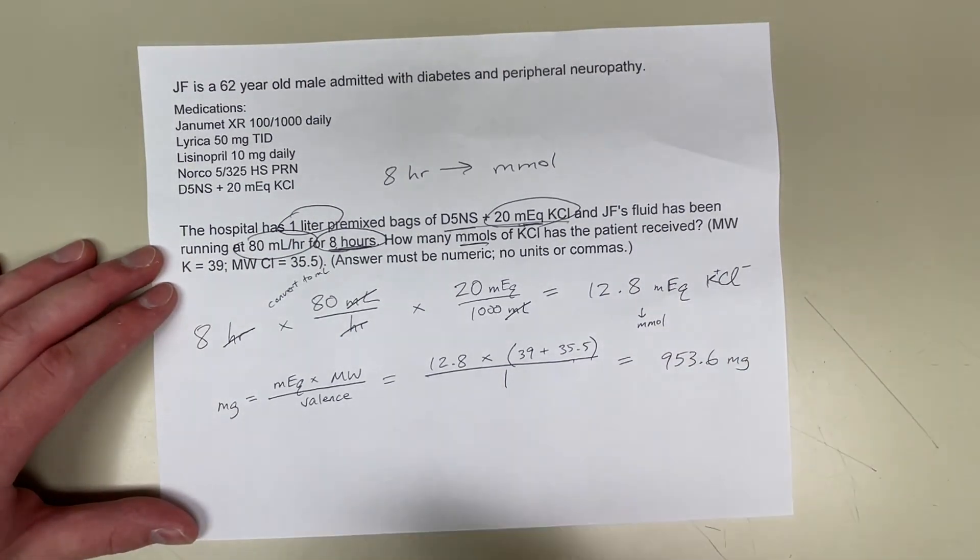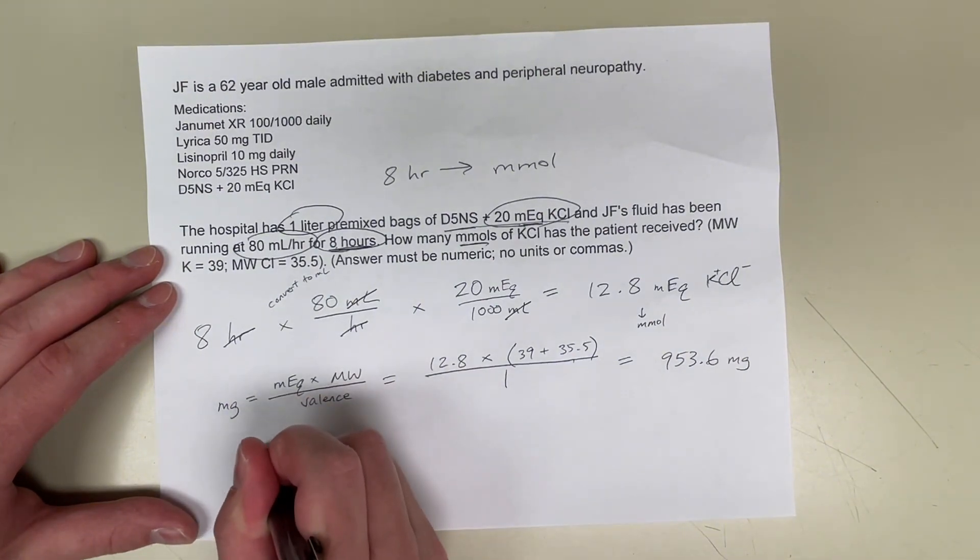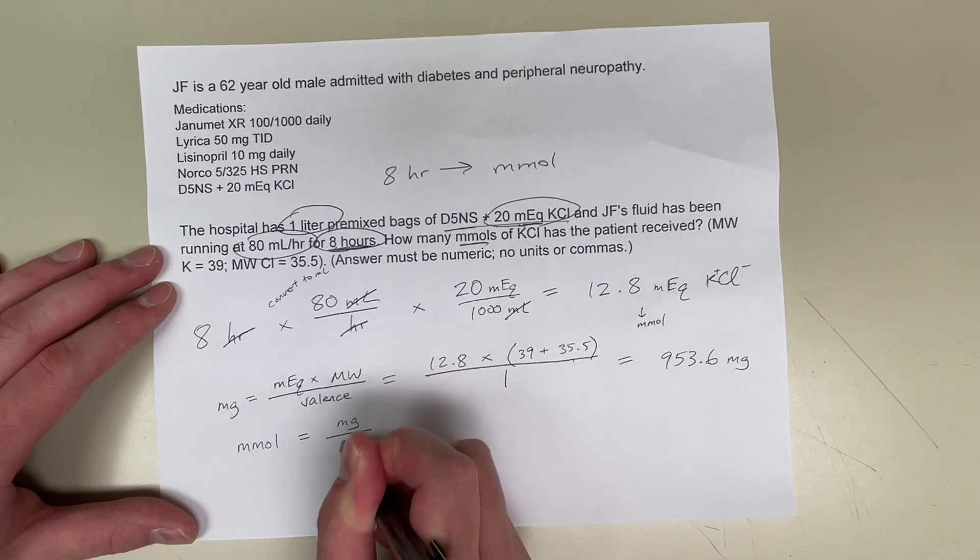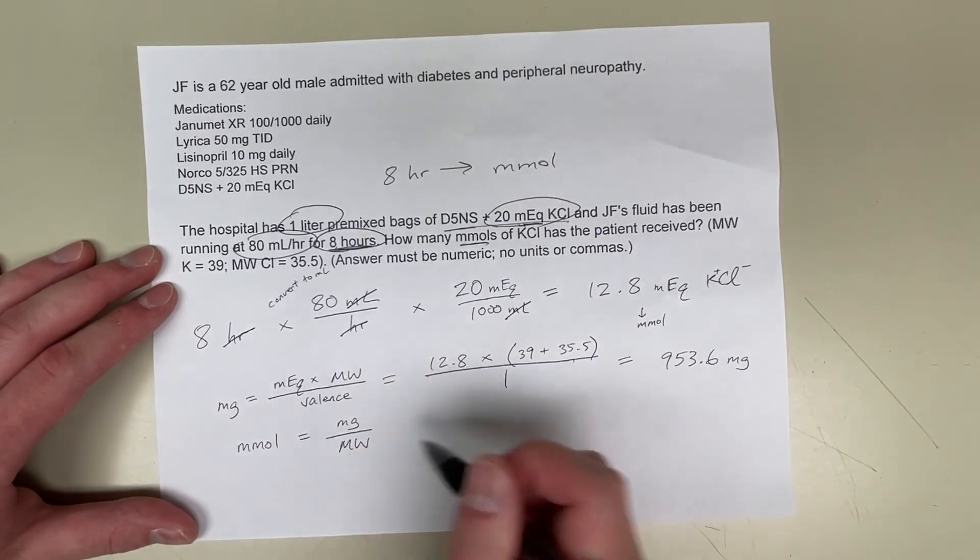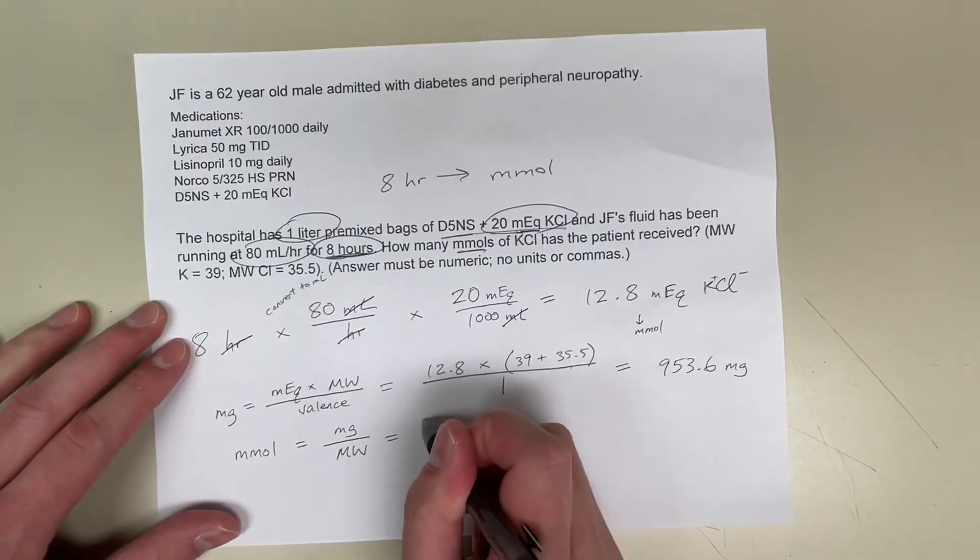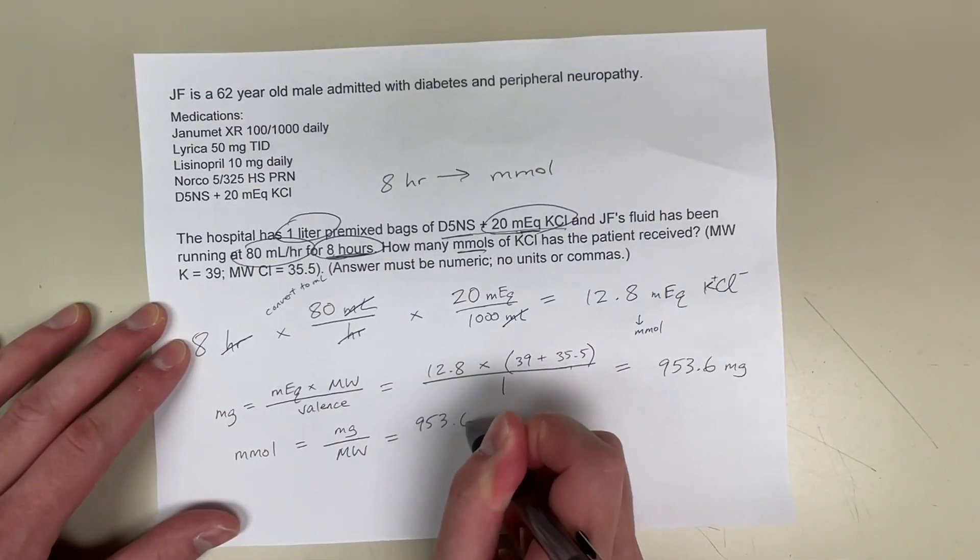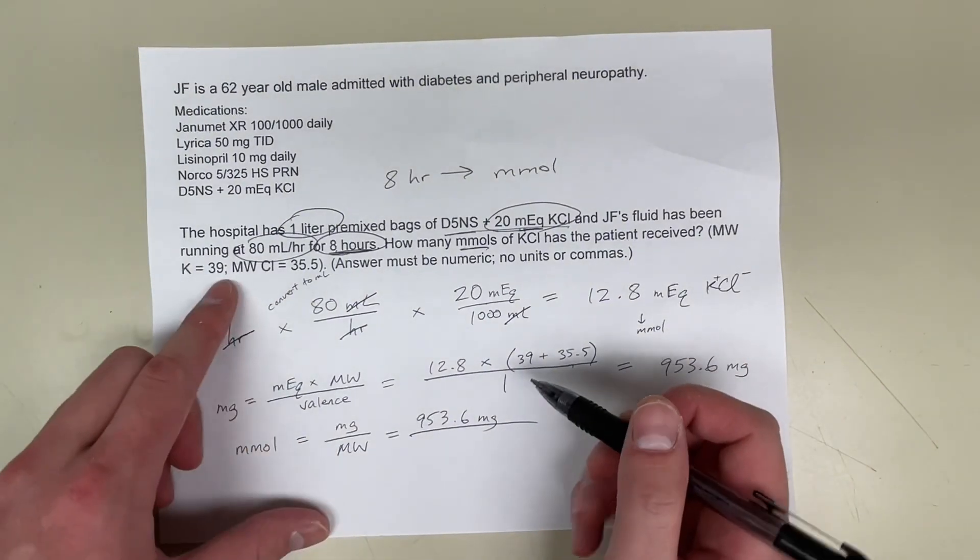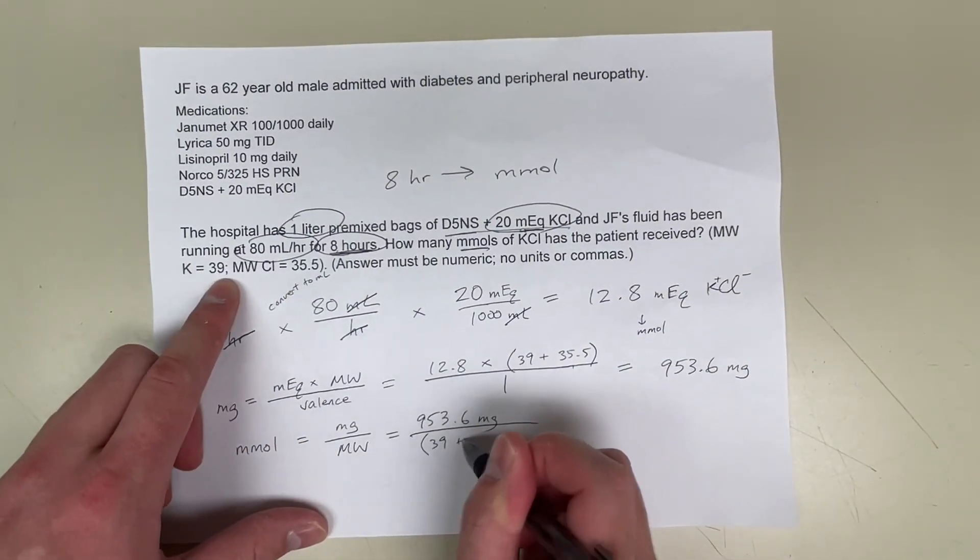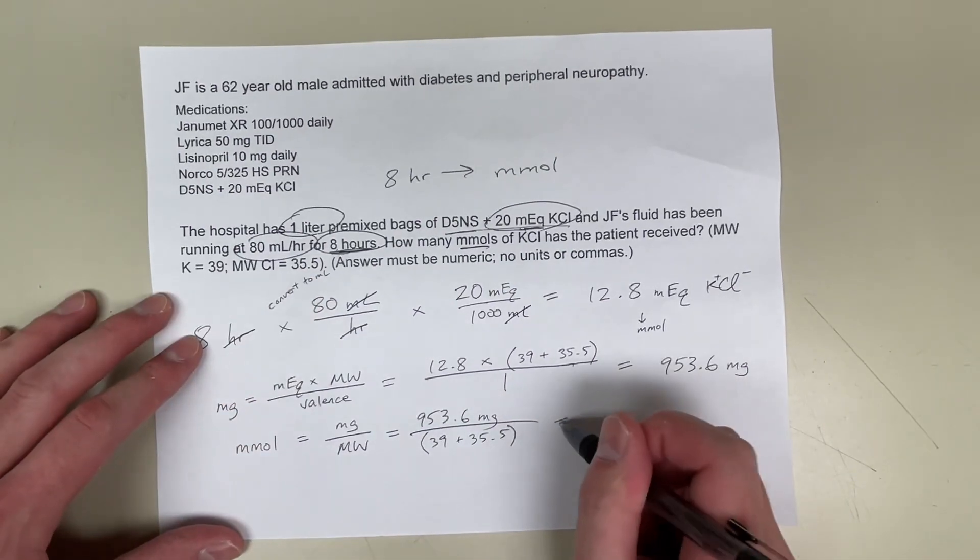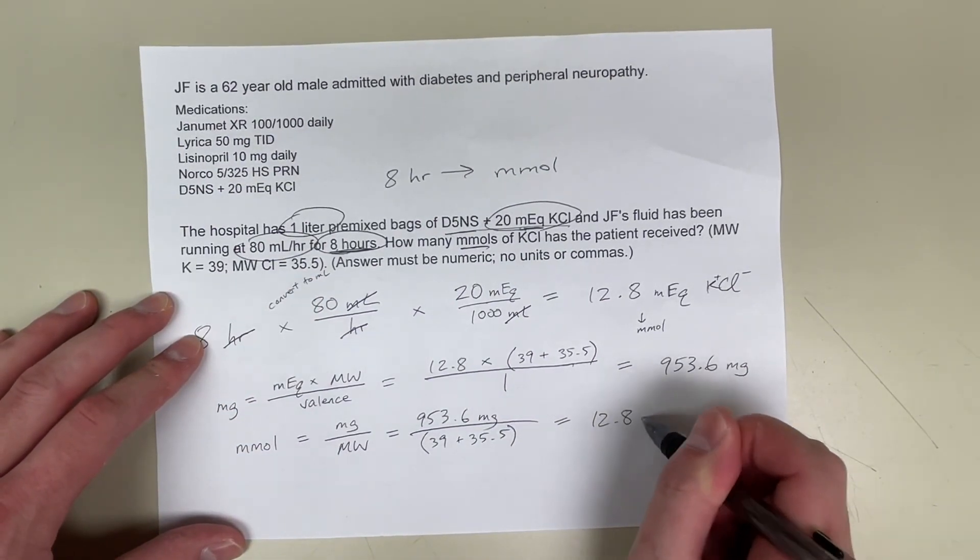Now I'm going to use another formula that you have to memorize: millimoles equals the milligrams divided by molecular weight. So milligrams I just calculated here was 953.6, all divided by the molecular weight, 39 plus 35.5. And that equals 12.8 millimoles.